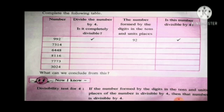Now, next table. Complete the following table. Again, here you have 4 columns: the number, divide the number by 4, the number formed by the digits in the tens and units place, and whether this number is divisible by 4. The first number is 992. The number formed by units and tens place is 92. 92 is divisible by 4, so the whole number 992 is divisible by 4.